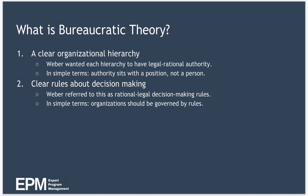An organisational hierarchy defines how people are structured and fit within an organisation. For example, a typical company will have the CEO at the very top of the hierarchy, followed by the executive board, and each board member will then be responsible for managers who, in turn, will manage employees. Weber wanted each hierarchy to have what he called legal rational authority, meaning that defined authority sits with a position in the hierarchy, not with a person or an individual. So your authority comes from the position you hold in the hierarchy and nothing else.